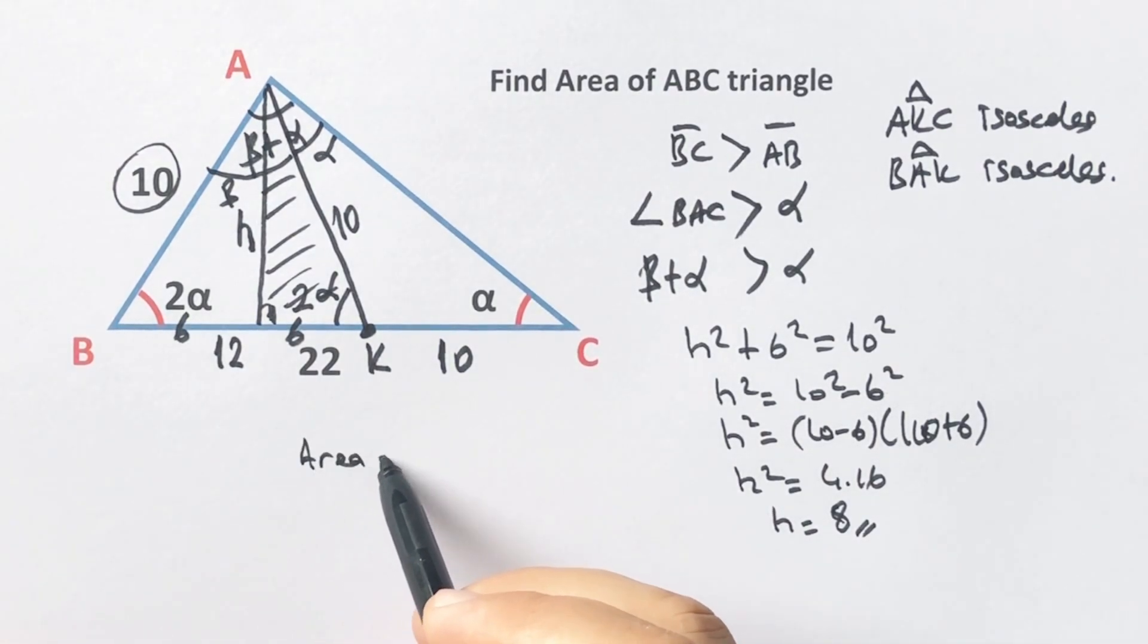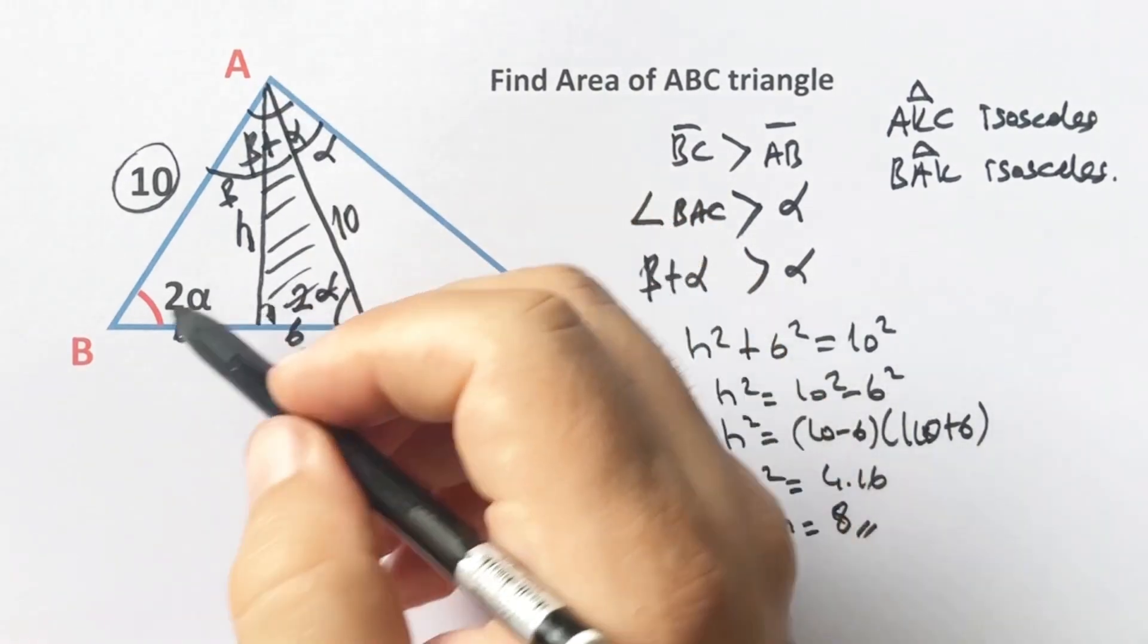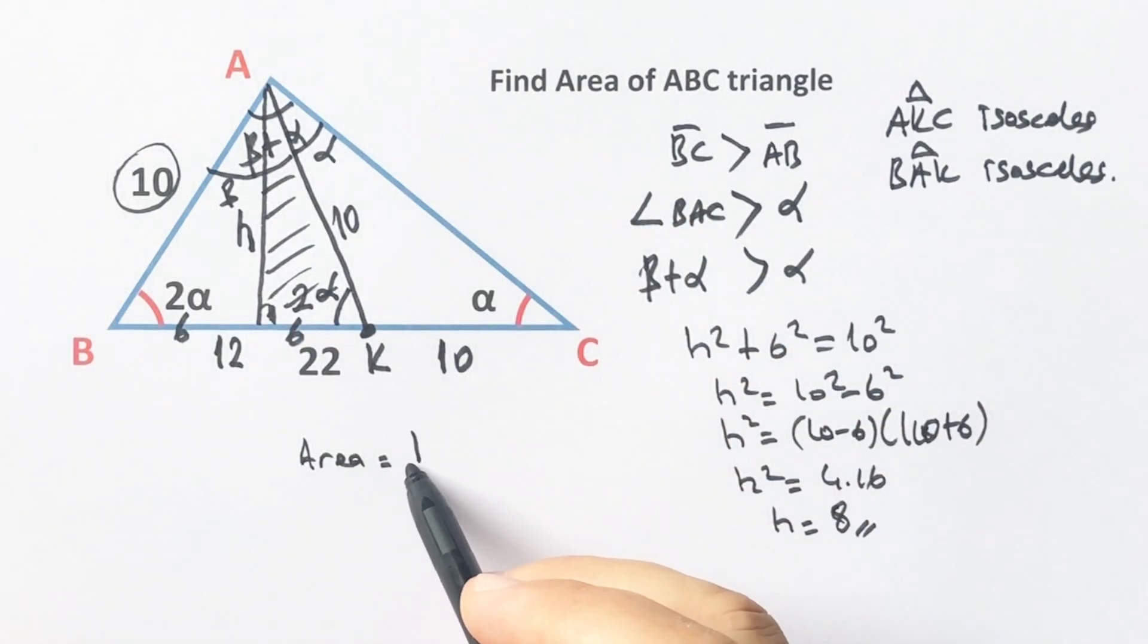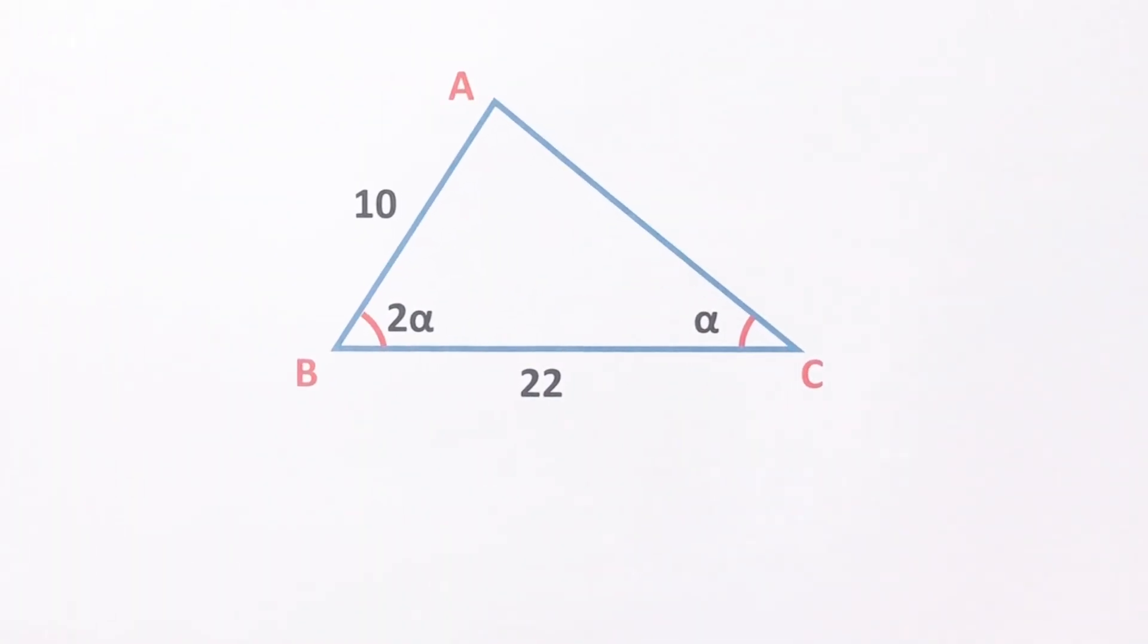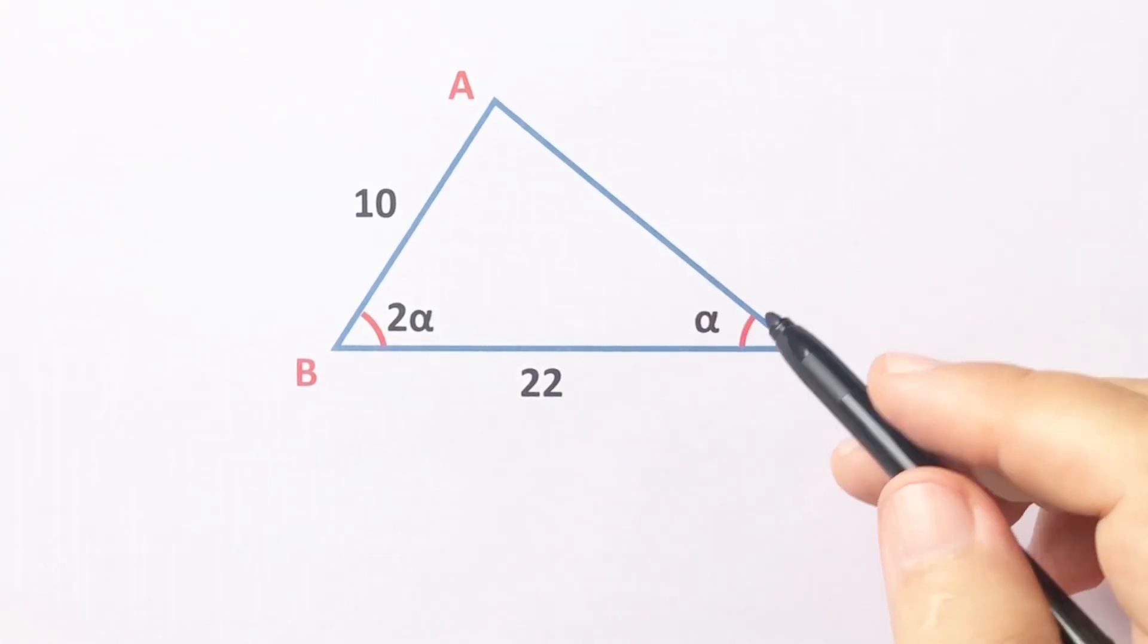So the area of this triangle equals half of the base and height. The area equals 88 unit squared. This was the first method. Now we will calculate the value of this triangle area using the second method.